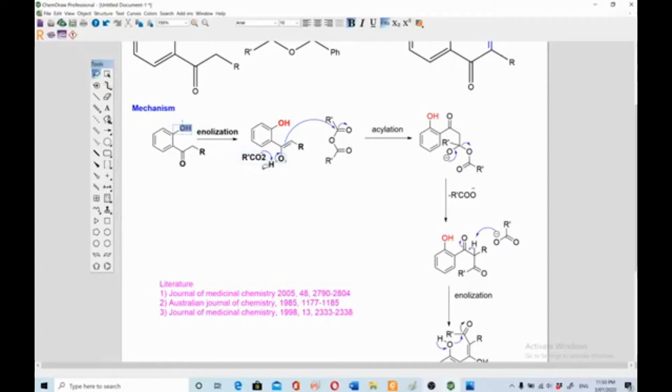The base picks proton from this hydroxyl and this negative charge goes back into the carbon-oxygen bond making it carbon double bond oxygen. This double bond acts with nucleophilic character and attacks on the carbonyl carbon of the anhydride group, and this oxygen goes towards—this bond goes towards oxygen. This is called acylation, the addition of acyl group.